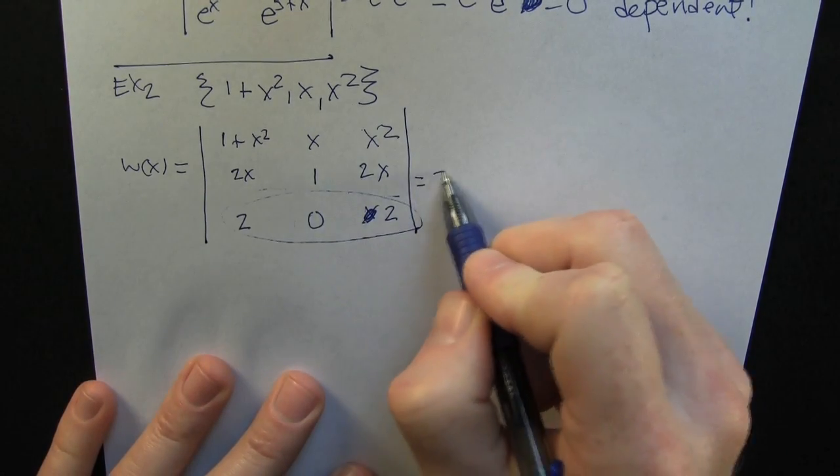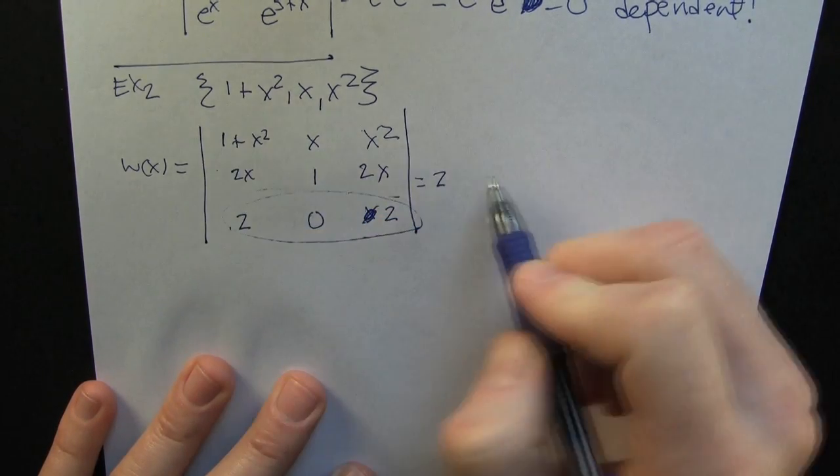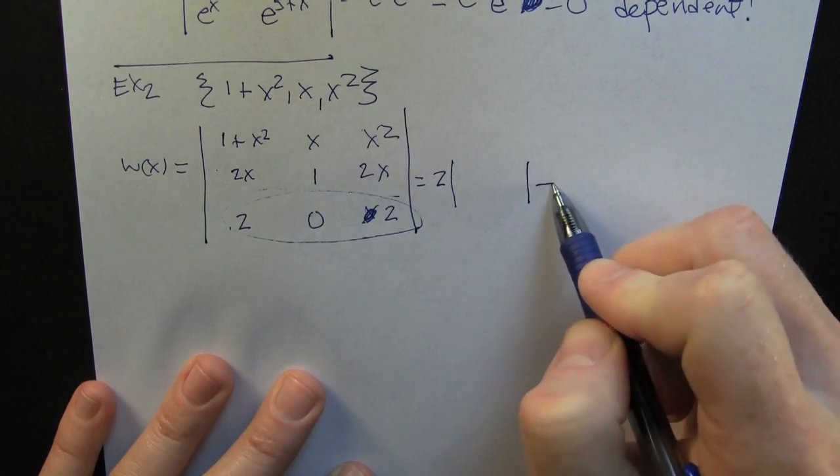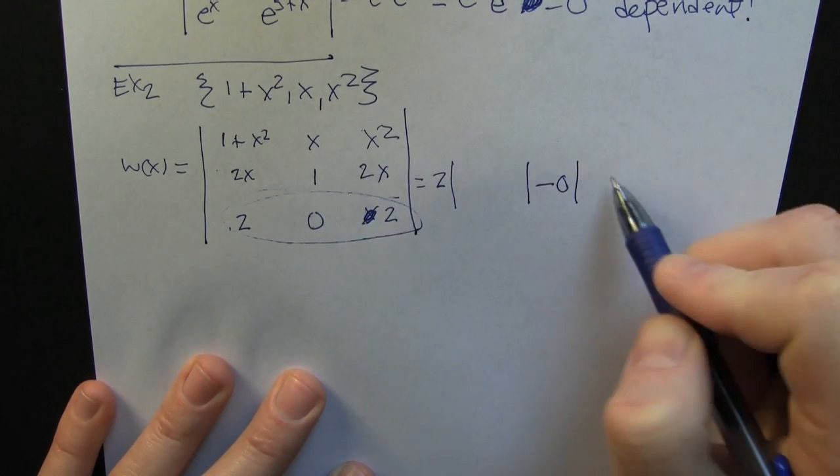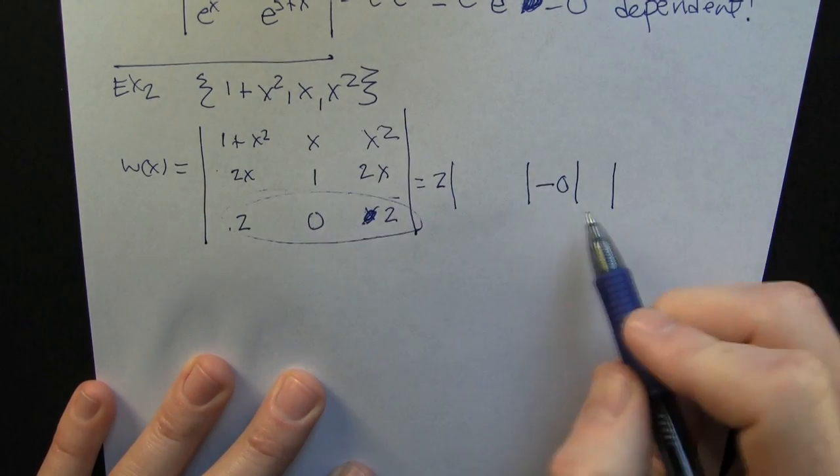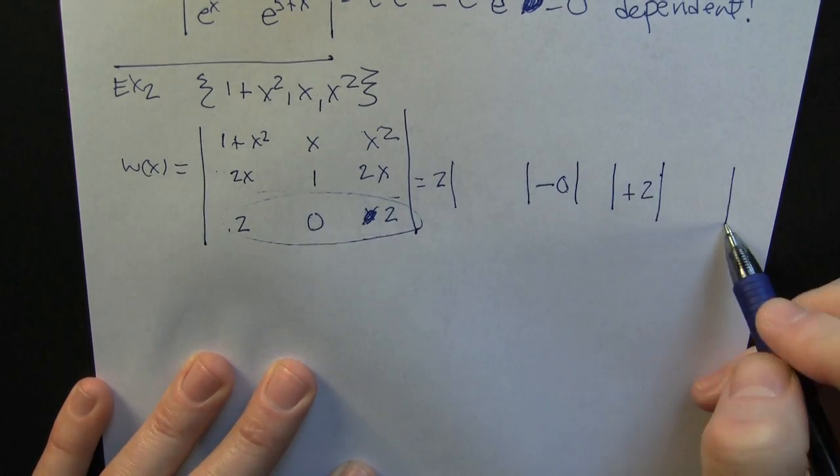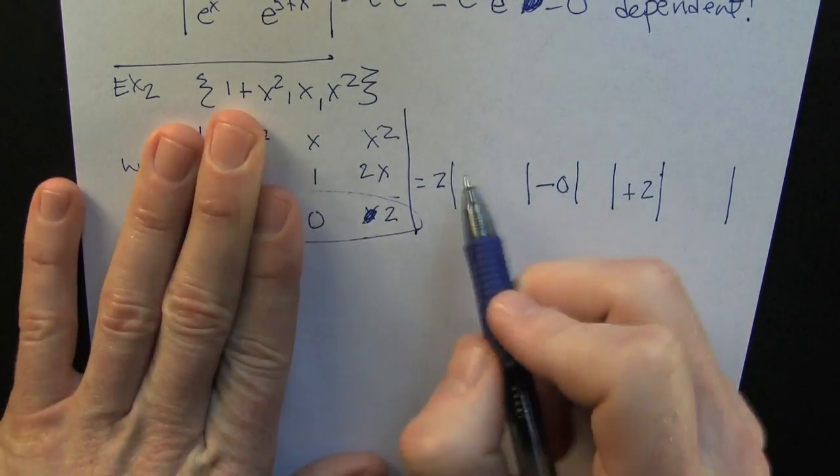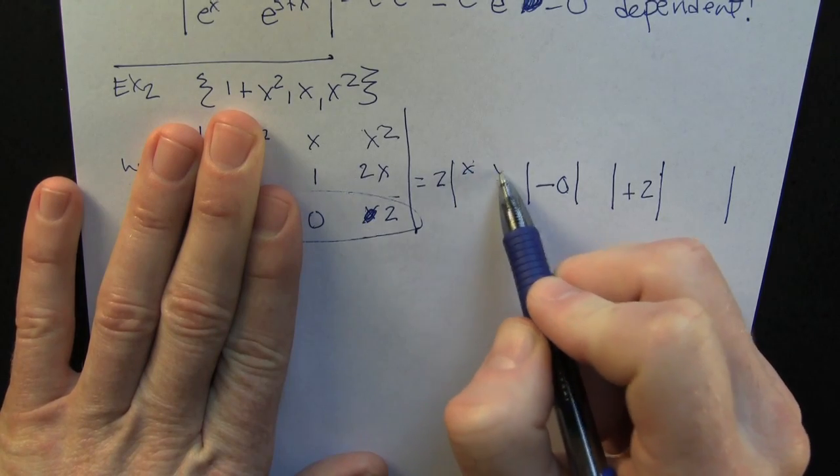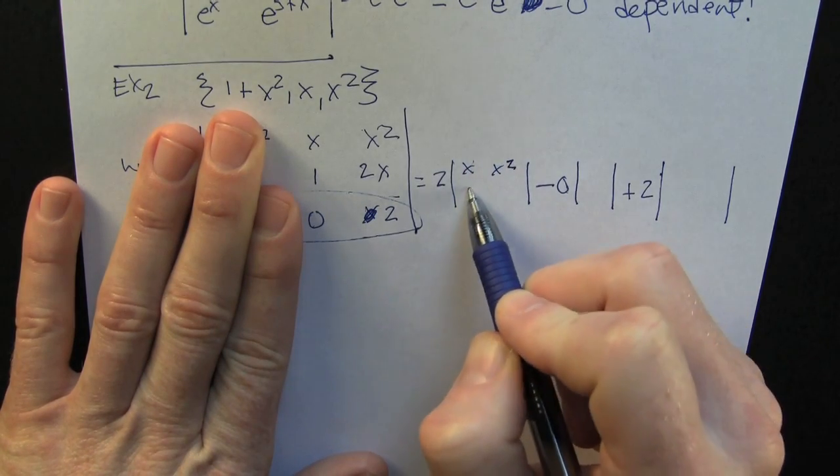Alright. So I take the derivative of 1 plus x squared, get 2x, and then the derivative of that is 2. And then I take the derivative of x and I get 1. I take the derivative of 1 and I get 0. And similarly, I do that with x squared.